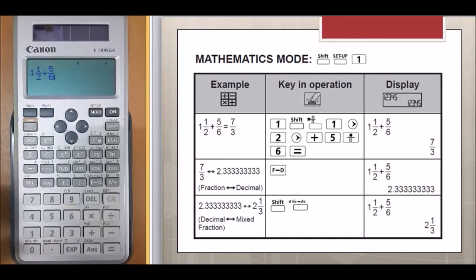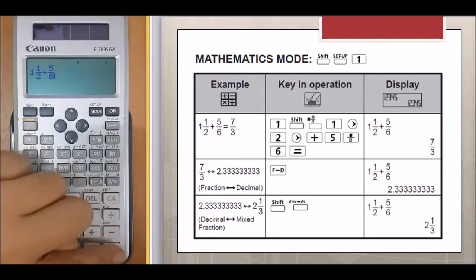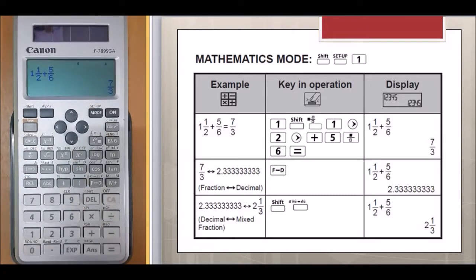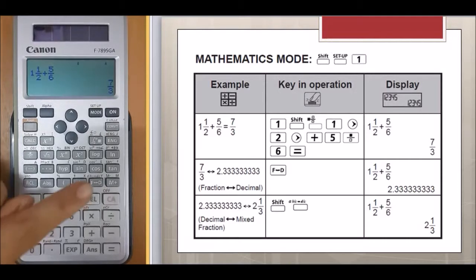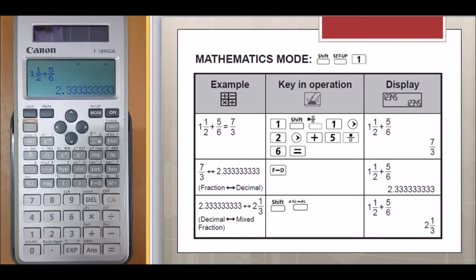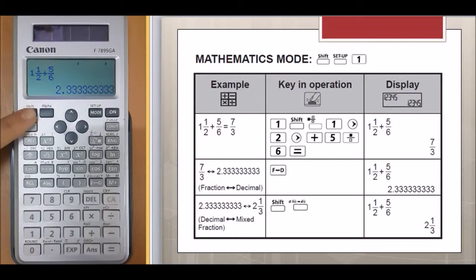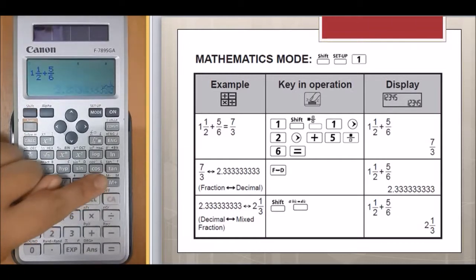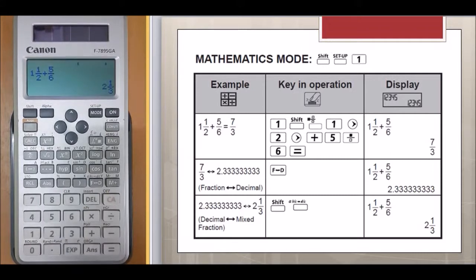Equals to 7 over 3. To get the decimal answer, press FD and you will get 2.33333. If you want the answer in mixed fraction form, press Shift FD. 2 and 1 over 3.